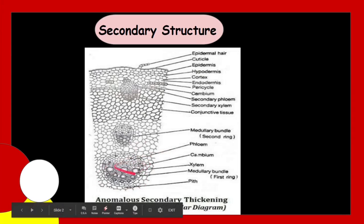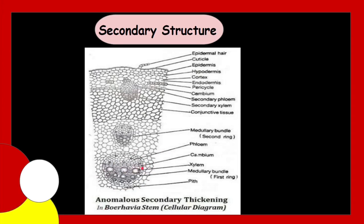The fascicular cambium gives rise to secondary xylem towards inner side and secondary phloem towards outside that the primary phloem gets crushed. Outer protective covering is formed by the activity of cork cambium which develops in hypodermal collenchyma. It produces cork towards outer side and secondary cortex towards inner side.